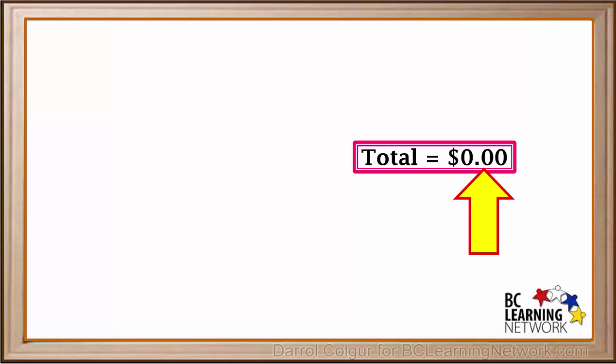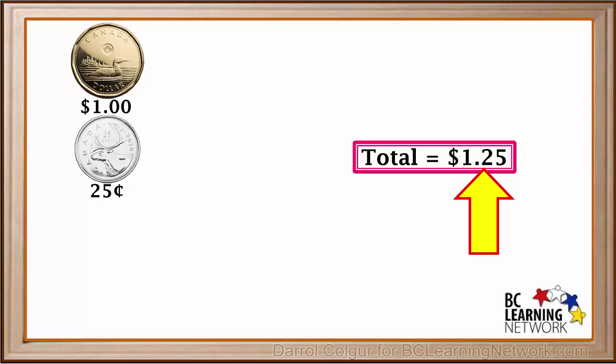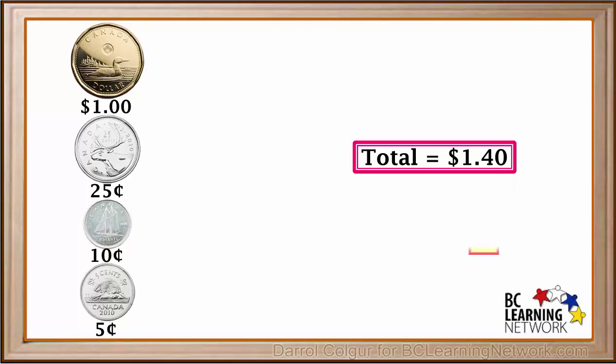As you practice this, you'll be able to count up coins quite quickly. We have one dollar plus 25 cents, which is 1.25, plus 10 cents is 1.35, plus 5 cents, plus 5 cents, is 1.45.